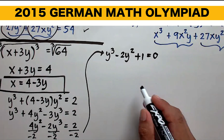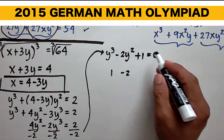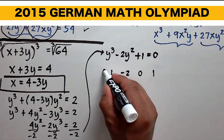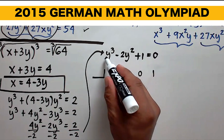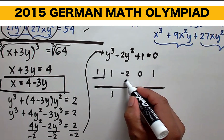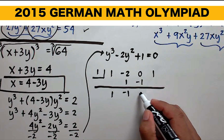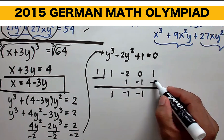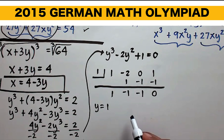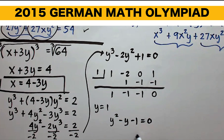This is a cubic equation and we can solve for y using synthetic division. Taking the coefficients: 1, negative 2, 0 (no linear term), and 1. By the rational root theorem, we try y equals 1. Dividing: bring down 1, 1 times 1 is 1, negative 2 plus 1 is negative 1, negative 1 times 1 is negative 1, 0 plus negative 1 is negative 1, negative 1 times 1 is negative 1, and 1 plus negative 1 is 0. So y equals 1 is a solution. Since this is cubic, we expect two more roots. The depressed polynomial is y squared minus y minus 1 equals 0.